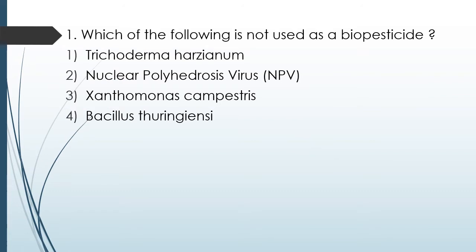Question No. 70: Which of the following is NOT used as a biopesticide? Options: Trichoderma herzianum, NPV, Xanthomonas campestris, Bacillus thuringiensis. The correct answer is Option 3 — Xanthomonas campestris is not used as a biopesticide.